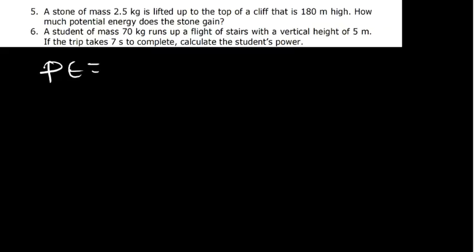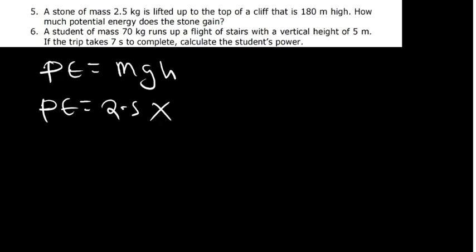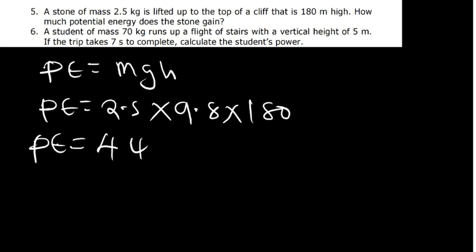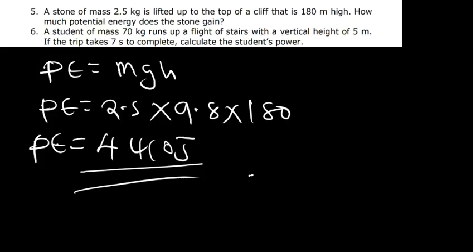Question 5 is saying: a stone of mass 2.5 kg is lifted up to the top of a cliff that is 180 meters high. How much potential energy does the stone gain? Potential energy equals mgh. Mass is 2.5, g is 9.8 (not given so we use 9.8), and height is 180. So 2.5 × 9.8 × 180 = 4,410 joules. That is the potential energy.